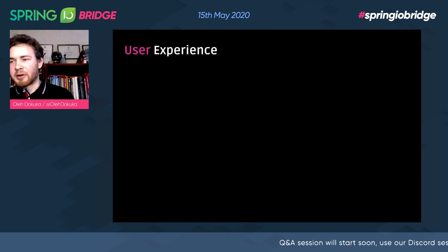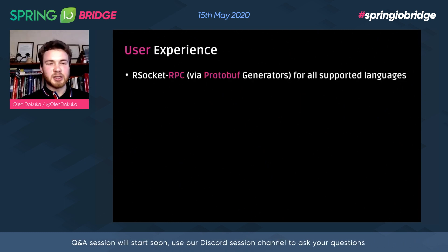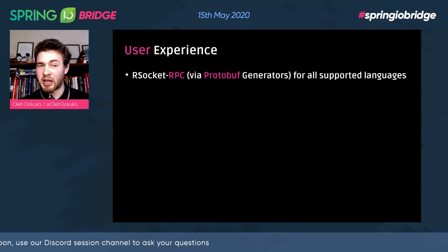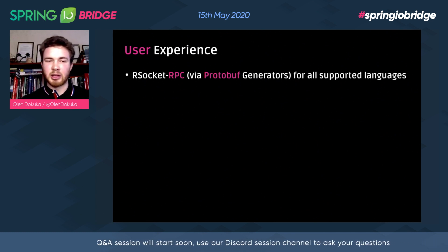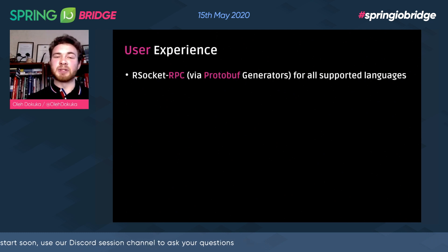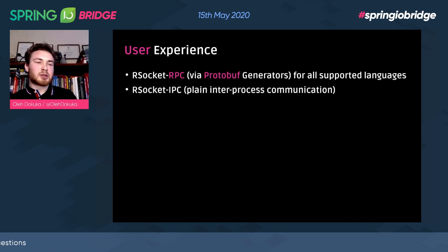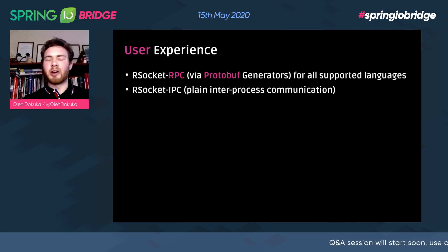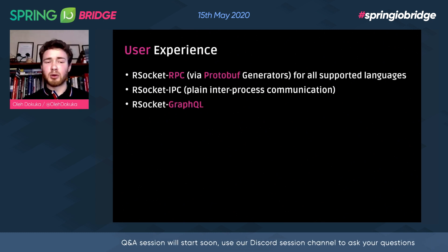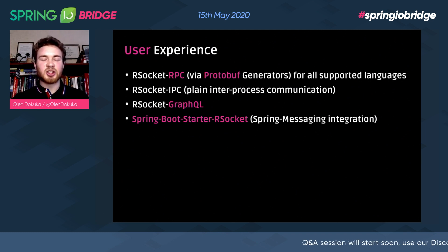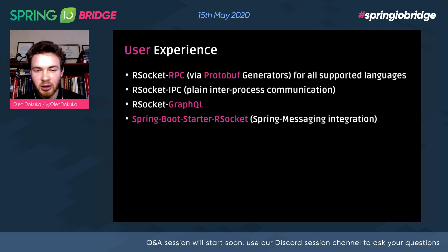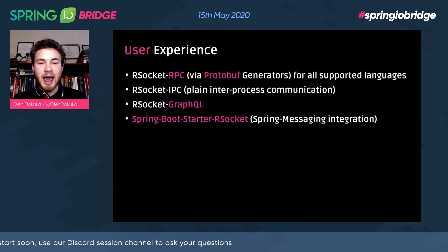For user experience: we support RSocket RPC — similar to gRPC but over RSocket. We use the same Protobuf RPC generator, generate the same files, and now you enjoy a faster, more stable, and flexible protocol with the same RPC communication style. We also have IPC for inter-process communication, support for GraphQL — RSocket over GraphQL — and for all Spring fans, there is a Spring Boot starter for RSocket. You can use your message mapping and controllers, and everything works on top of RSocket.